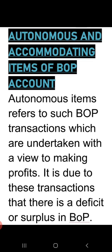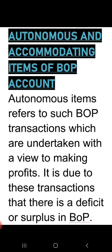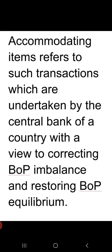Now after BOP equilibrium, disequilibrium, surplus and deficit, let's have a look at autonomous and accommodating items of BOP. Autonomous items refers to such transactions of BOP which are undertaken with a view to making profit — transactions done for profit motive are called autonomous transactions. Accommodating items are transactions undertaken with a view to correcting BOP imbalances — whatever imbalances exist in BOP, transactions done to correct them are accommodating items.